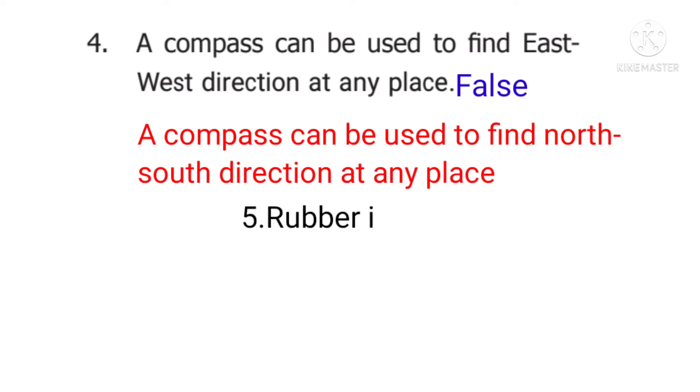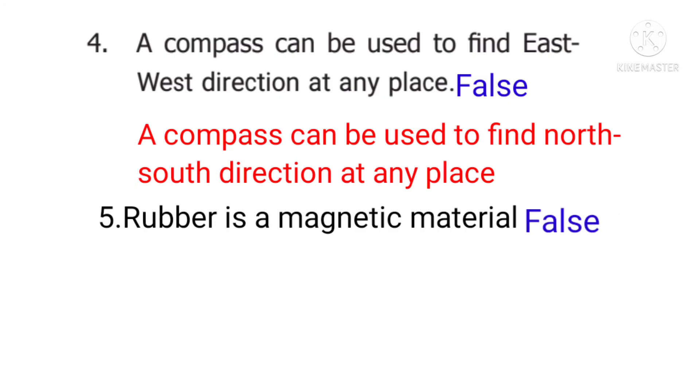5th question: Rubber is a magnetic material. Answer: False. Corrected statement is, rubber is a non-magnetic material.